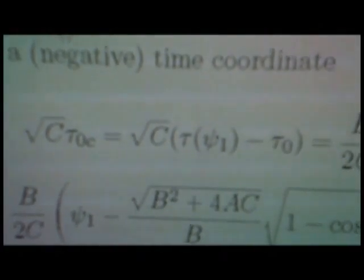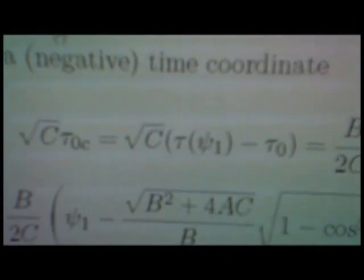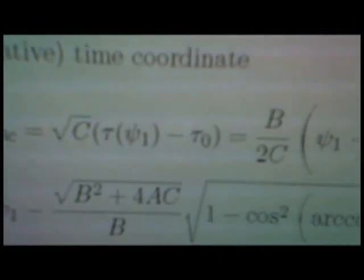Which is equal to square root c times tau of psi 1 minus tau 0 is equal to b over 2c times in brackets psi 1 minus square root b squared plus 4ac over b times psi 1.